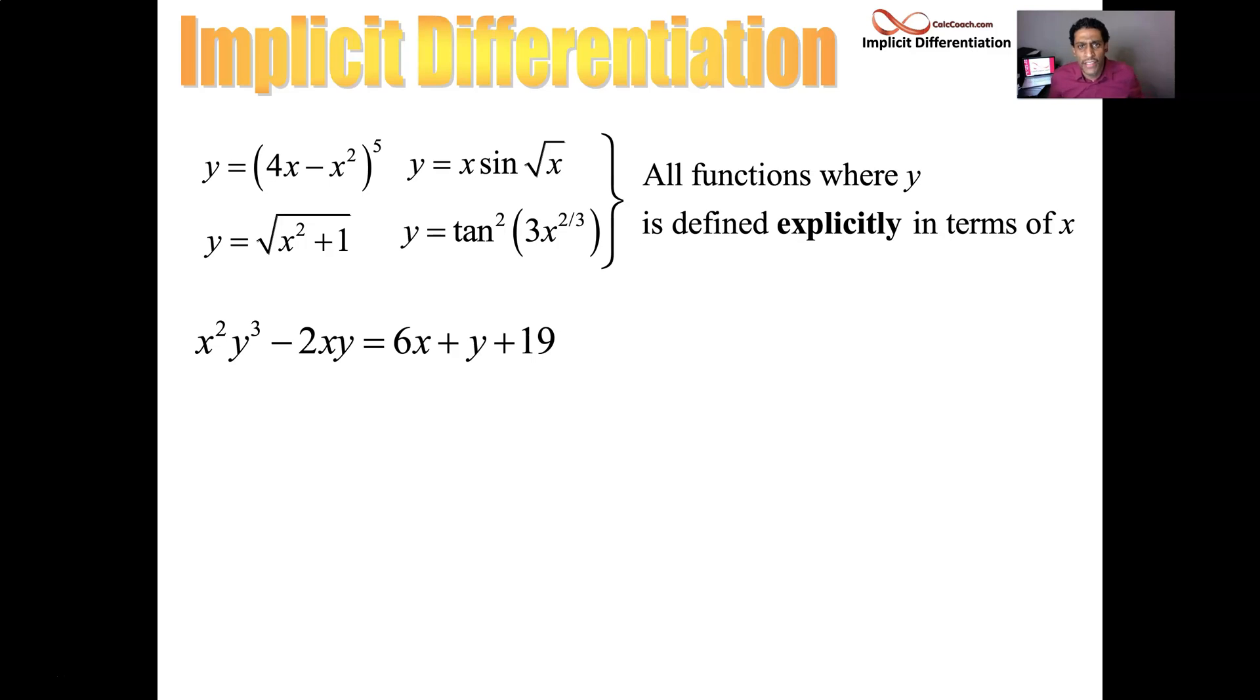In fact, sometimes what happens with these kinds of functions is they aren't even technically functions. They will be violators of the vertical line test. So here's a graph of this function. And I'm interested in finding the slope of the tangent line at a particular value of x and y that's on the curve.